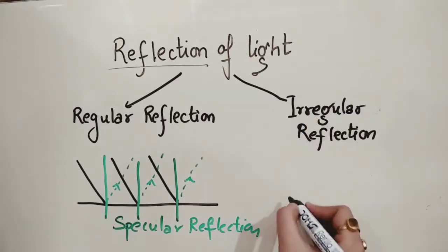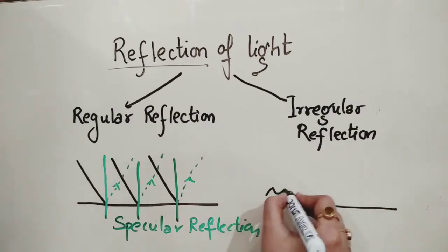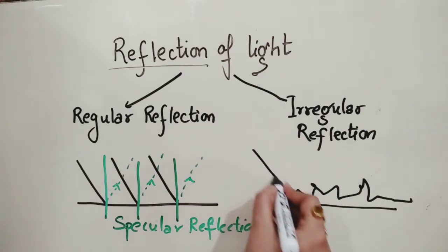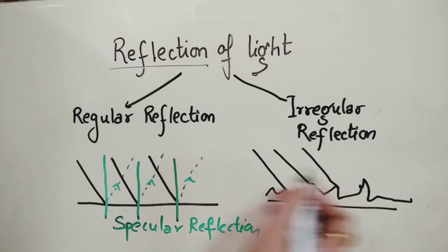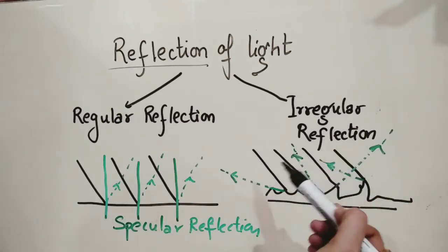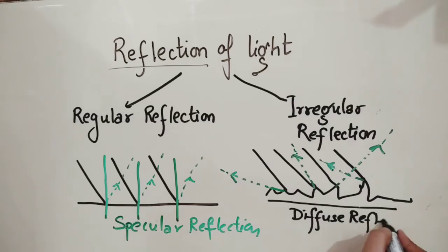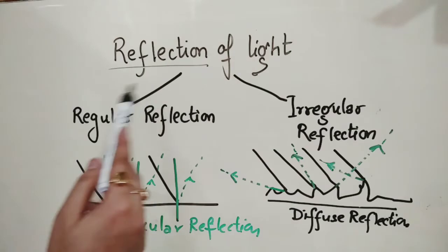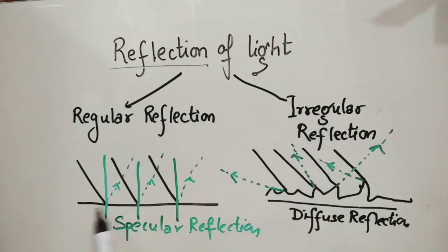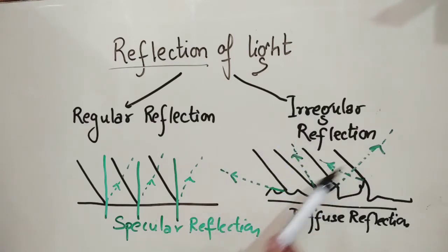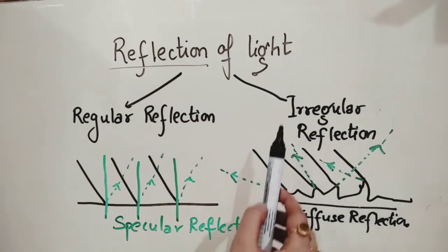Whereas in case of irregular reflection, there is an irregular surface — a rough surface — and when parallel rays fall over it, all rays reflect in different directions. Such a reflection is known as irregular reflection, or we can say diffuse reflection. So, reflection of light can occur in two ways — regular and irregular — depending upon the surface. If it is plain and polished, it is regular reflection. If it is a rough surface and all rays are reflecting in different directions, then it is diffuse or irregular reflection.